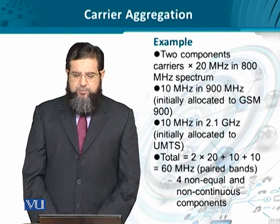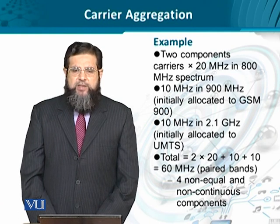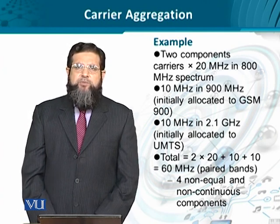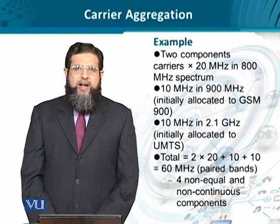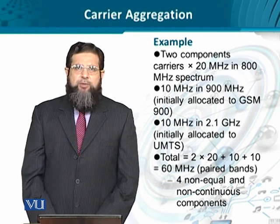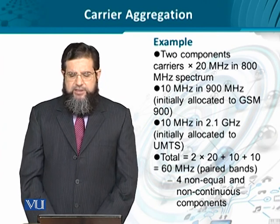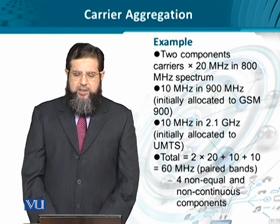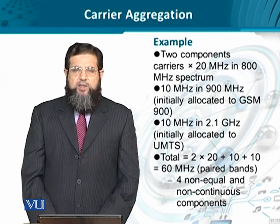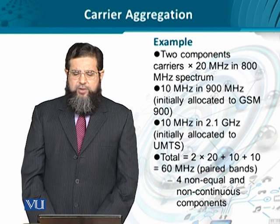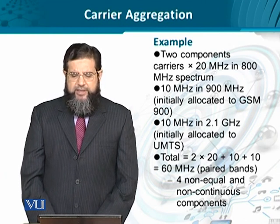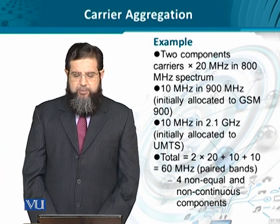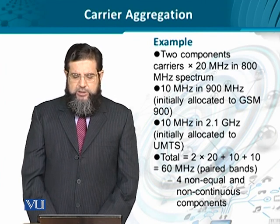Let's look at an example. This example highlights that we can choose from available spectrums depending upon our requirements at will. There is no compulsion to choose from within a band or to have only adjacent frequency components. For example, in the 800 MHz spectrum we take two components each having bandwidth of 20 MHz. In the 900 MHz spectrum — the initial GSM 900 MHz band — we have 10 MHz spectrum, that is 5 MHz each. And then in the 2.1 GHz spectrum, we take another 10 MHz, that is two 5 MHz bands.